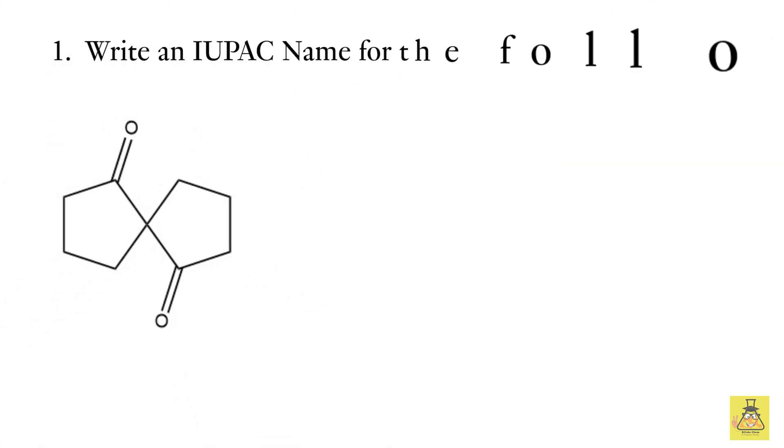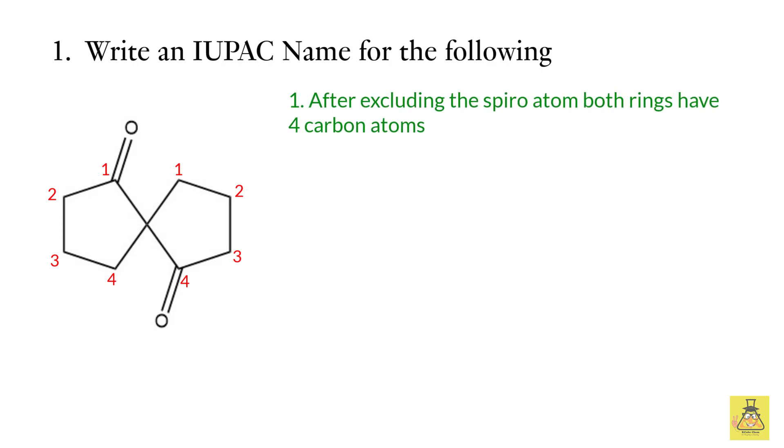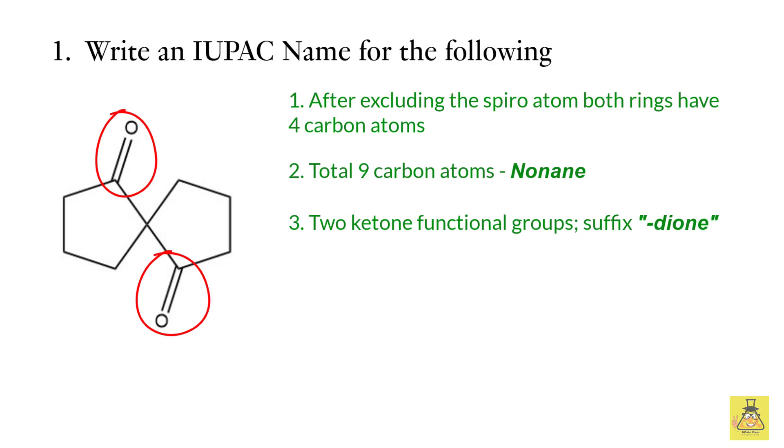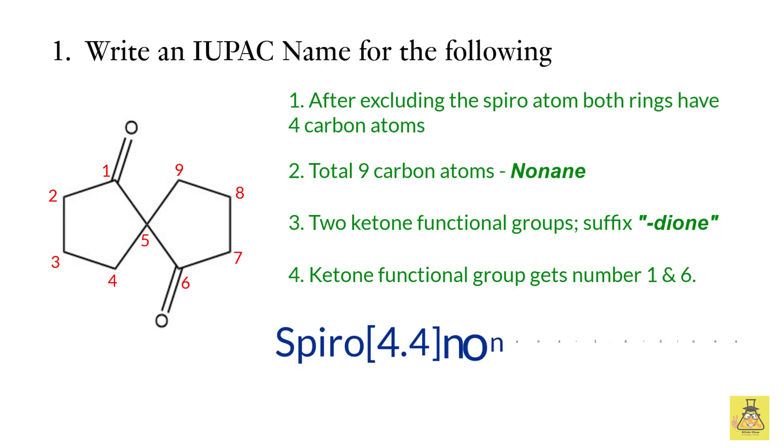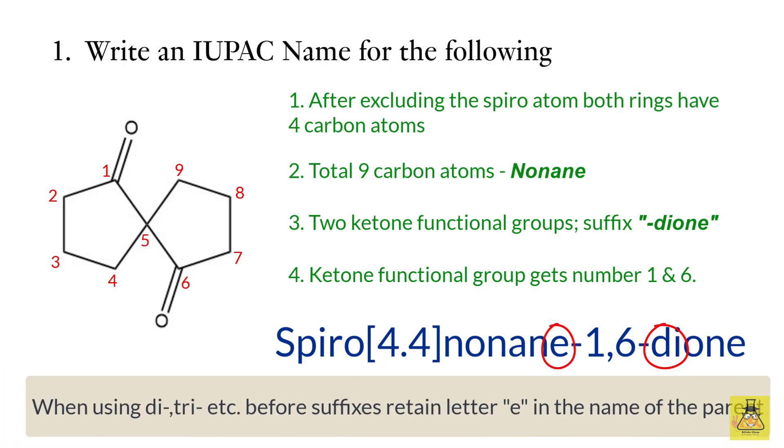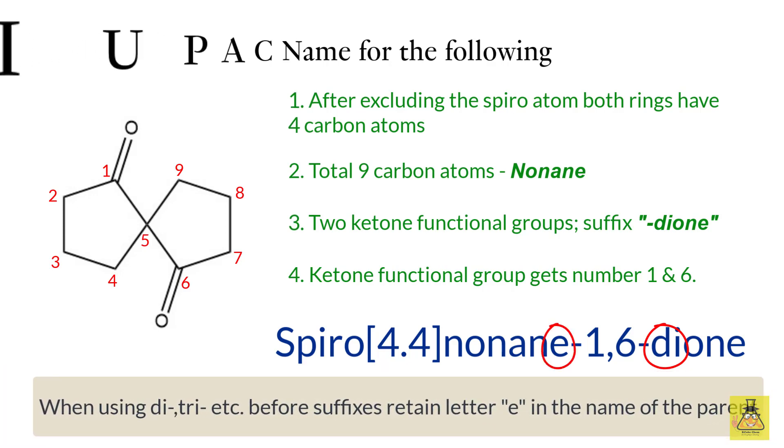Let's look at the first molecule. Both the rings here have four carbon atoms each after excluding the spiro atom. There are total nine carbon atoms, hence our parent is nonane. We have two functional groups and both of them are ketone, hence we will use the suffix dione. Since both the rings are of the same size, we can start numbering from any of the two rings, bearing in mind that the ketone functional group should get the lowest possible number. In our case they get number one and six. Thus we can write the name as spiro[4.4]nonane-1,6-dione. Please bear in mind that since we are going to use a prefix di to indicate two ketones, we will retain the letter e in the name of the parent, that is nonane.